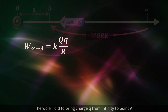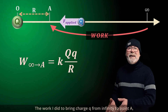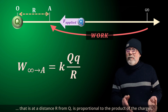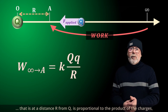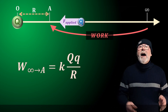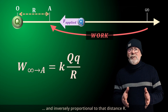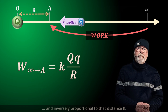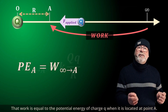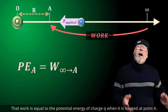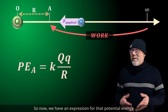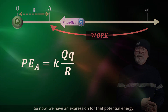The work I did to bring charge little q from infinity to point A — that is, at a distance R from charge big Q — is proportional to the product of the charges and inversely proportional to that distance R. That work is equal to the potential energy of charge little q when it is located at point A, so now we have an expression for that potential energy.